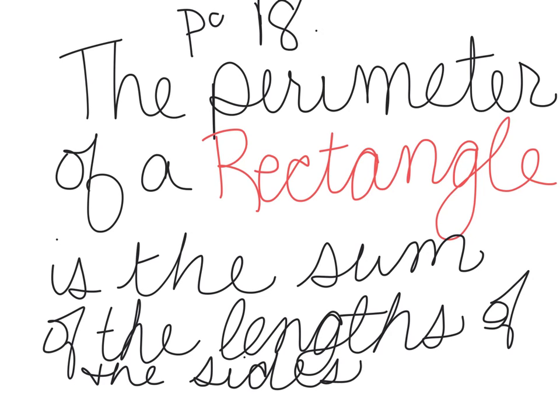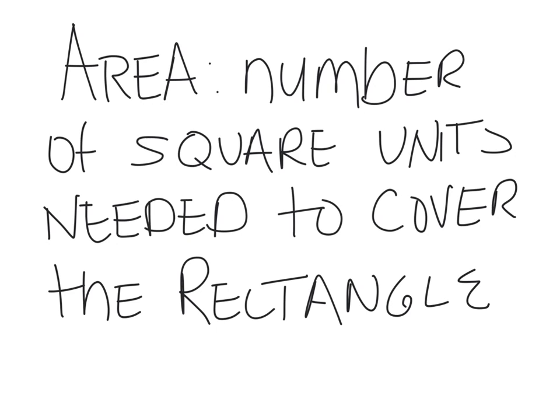The first one on page 18 in your note-taking book is Perimeter under vocabulary. The definition of Perimeter: the perimeter of a rectangle is the sum of the lengths of the sides. So it's the total of the lengths of the sides. And then the definition for area is the number of square units needed to cover the rectangle. These definitions, the perimeter and the area, you need to memorize those. You've got to learn what those definitions are.